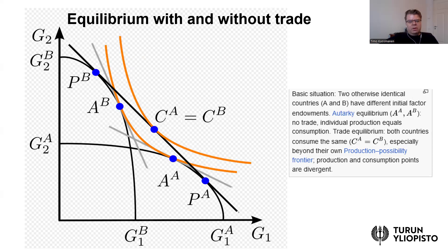If the countries can trade, then the new situation is characterized by CA = CB. Because consumers in both countries have identical preferences, they also prefer to get the same consumption basket. And notice that CA = CB is outside of the production possibility sets of both countries.